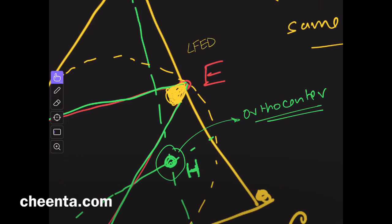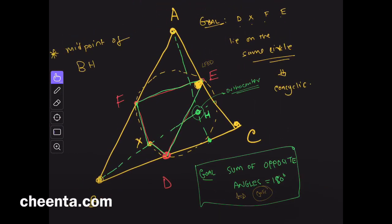So, what is angle FED? If you look at this picture very carefully, angle FED is exactly equal to this yellow angle right here, angle B. This is angle B. Why?